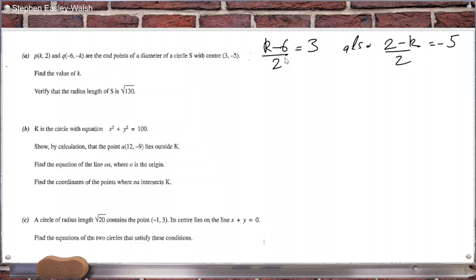So just to check, that would be 6, that would make k is 12. And here, that would mean 2 minus k is minus 10, so that means k is 12 as well. So it looks like k is 12.